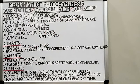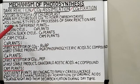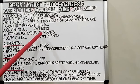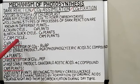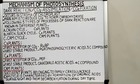Dark reaction uses the assimilatory powers produced during the light reaction. In different plants, the following three types of dark reaction processes are known: first is the Calvin cycle, which occurs in C3 plants; the Hatch and Slack cycle, which occurs in C4 plants; and the CAM cycle, which occurs in CAM plants. Before going into the detail of these cycles, we first need to understand what are C3, C4, and CAM plants.